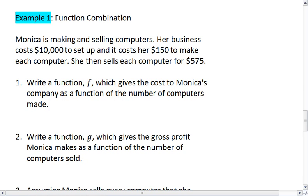In example one, we have function combination. Monica is making and selling computers. Her business costs $10,000 to set up, and it costs her $150 to make each computer. She then sells each computer for $575.